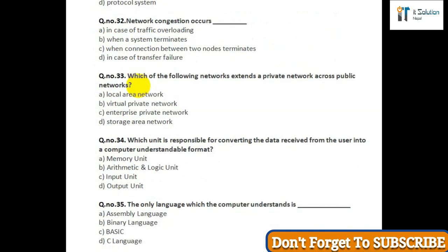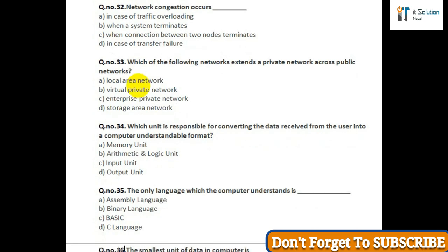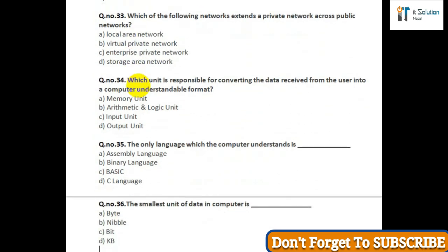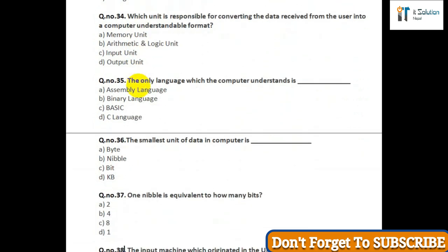Question number thirty-five: The only language which the computer understands is — option A: assembly language; option B: binary language; option C: BASIC; option D: C language. Question number thirty-six: The smallest unit of data in a computer is — option A: byte; option B: nibble; option C: bit; option D: KB. Question number thirty-seven: One nibble is equivalent to how many bits — option A: 2; option B: 4; option C: 8; option D: 1.